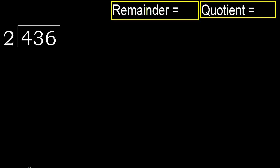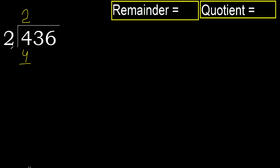436 divided by 2. 4 is not less. 2 multiplied by which number is nearest to 4 but not greater? 2 multiplied by 3 is 6 — 6 is greater. 2 multiplied by 2 is 4, not greater. Subtract: 4 minus 4 is 0. Eliminate 0, bring down 3.